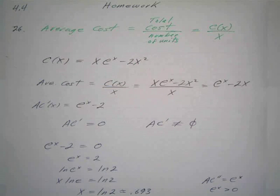Section 4.4, number 26 on average cost. Remember, the average cost is the total cost of all of our production divided by the number of units we produce. Number 26 says minimizing average cost.